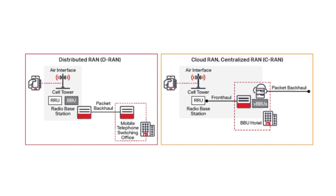The RRU decides the coverage of the system. As for the antenna, it interfaces a cell phone wirelessly and transmits and receives RF signals — it decides the shape of the coverage. Now we can define Cloud RAN. In Cloud RAN, the baseband unit moves to a centralized location, and the cell site only has the antenna and the remote radio unit.